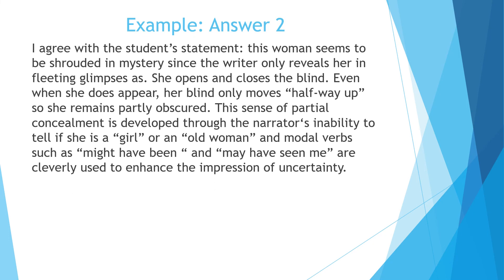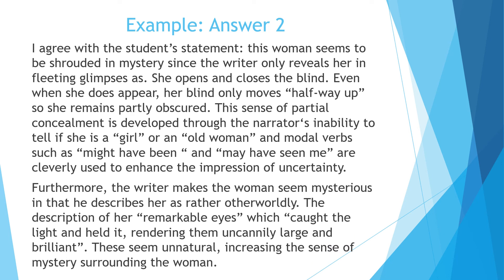Example answer. I agree with the student's statement. This woman seems to be shrouded in mystery, since the writer only reveals her in fleeting glimpses as she opens and closes the blind. Even when she does appear, her blind only moves halfway up, so she remains partly obscured. This sense of partial concealment is developed through the narrator's inability to tell if she is a girl or an old woman, and modal verbs such as "might have been" and "may have seen me" are clearly used to enhance the impression of uncertainty. Furthermore, the writer makes the woman seem mysterious in that he describes her as rather otherworldly. The description of her remarkable eyes, which "caught the light and held it, rendering them uncannily large and brilliant", seems unnatural, increasing the sense of mystery surrounding the woman.